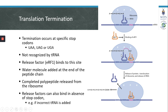After the ribosome catalyzes the bond between the release factor, the ribosome will shift to the next position. The transfer RNA that was originally in the P site is released as it moves to the E site. At the same time, the polypeptide chain becomes released from the ribosome.